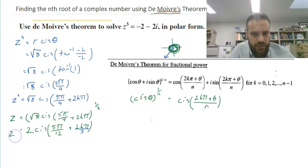So now we know that z equals 2 cis, 5 pi on 12, plus 2k pi on 3. Now we just need to sub in some k values and get some answers.